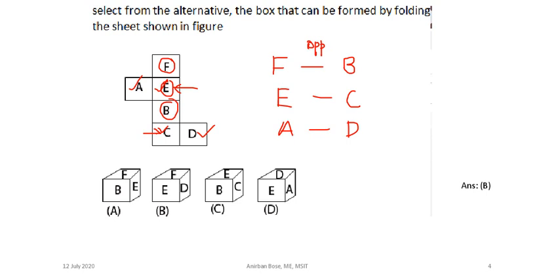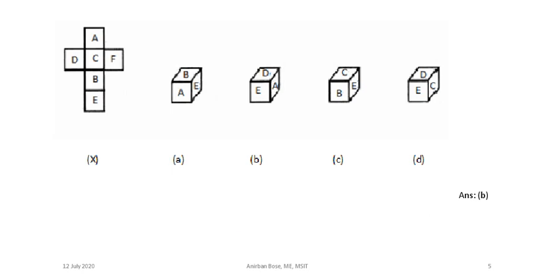Since opposite faces cannot be consecutive sides, we check each option. Option with F and B together is not possible since they are opposite. F with D is possible, D with E is possible since they are not opposite. In option C, E and C are opposite so that is not possible. D and A cannot be consecutive sides so that option is also not possible. Answer is B.